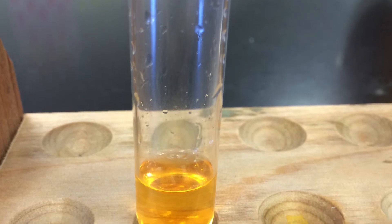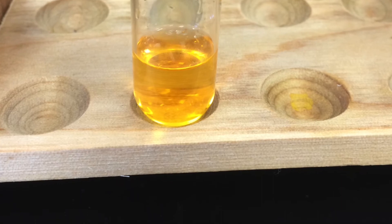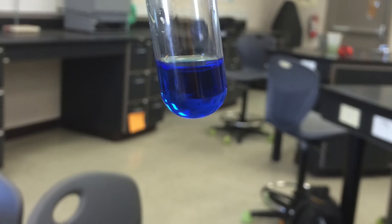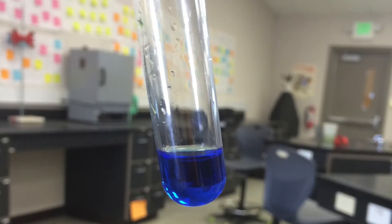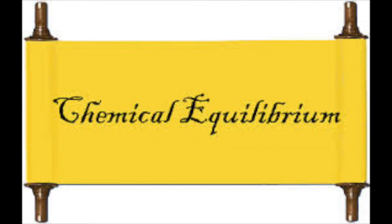When HCl, an acid, is added, it adds H+ ions to the reaction, which causes the reaction to shift left. When NaOH, a base, is added, H+ ions are being removed from the reaction, which causes the reaction to shift right. Since HCl is a strong acid, it dissociates completely so there are more products, therefore shifting the system to the left. When NaOH was added with HCl and the indicator, it counteracted the strong acid by shifting the system right and placing the reaction back at equilibrium.